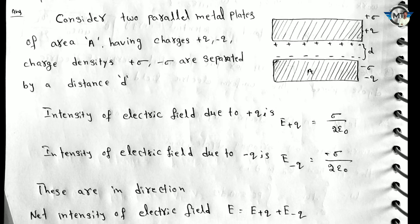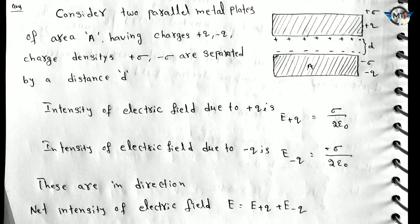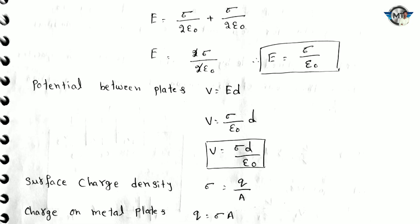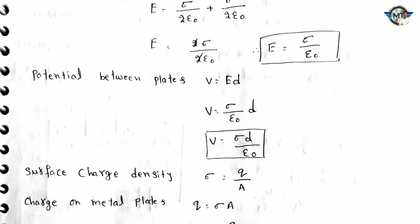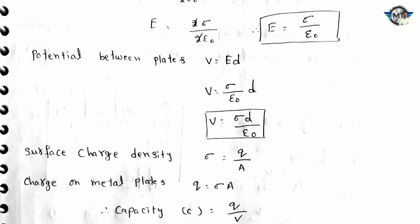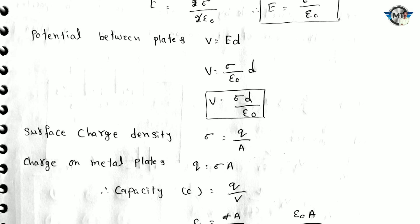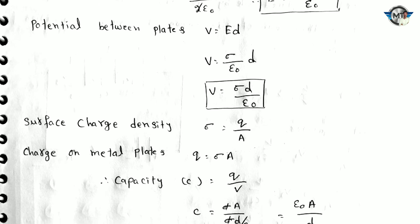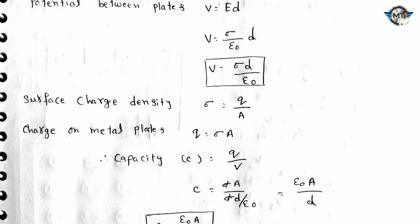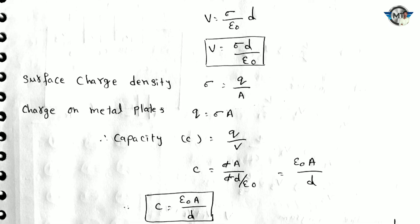The electric field due to the minus charge is E minus equals sigma by 2 epsilon naught in the opposite direction. Looking at both, the total intensity of electric field is sigma by 2 epsilon naught plus sigma by 2 epsilon naught, giving total E equals sigma by epsilon naught. The potential between two plates is V equal to E times d, which gives sigma d by epsilon naught. The surface charge density sigma is equal to q by A.